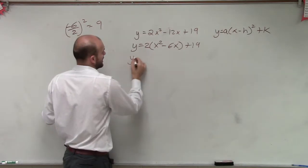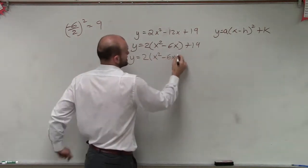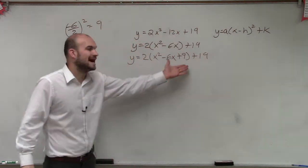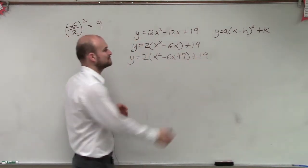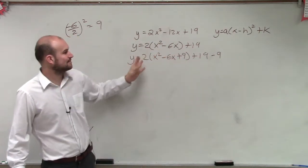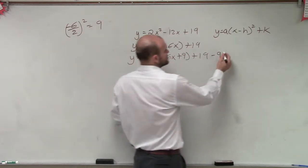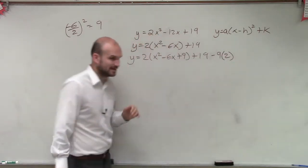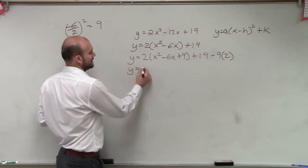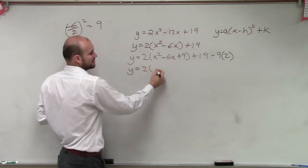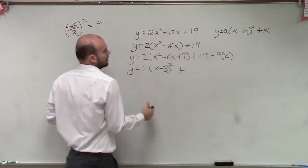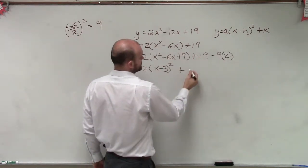So now I say y equals 2 times x squared minus 6x plus 9 plus 19. But since I added 9 on this side, I need to subtract 9 on this side. But remember, I didn't just add 9. I added a 9 that's being multiplied by 2. So I need to subtract a 9 that's being multiplied by a 2. Now, I simplify my work and say y equals 2 times, now I factor this so it's a binomial squared. That becomes negative 18, so it's plus 1.